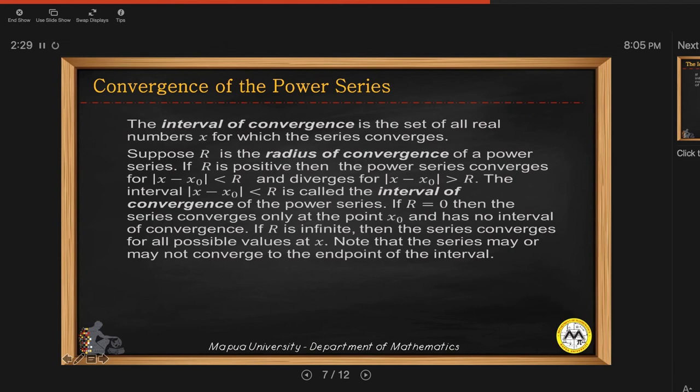So when r is equal to 0, then the series will converge at the point x sub 0 and has no interval of convergence. When r is infinite, the series converges for all possible values of x. Note that the series may or may not converge at the endpoints of the interval.